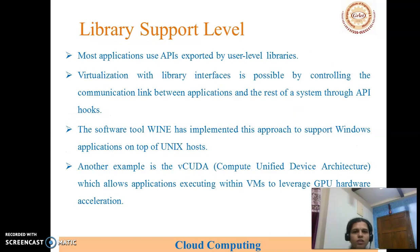At the library support level, most applications use APIs exported by user-level libraries. Virtualization with library interfaces is possible by controlling the communication link between the applications and the rest of the system through API hooks. The software tool Wine has implemented this approach to support Windows applications on top of a Linux host. Another example is VCUDA — Compute Unified Device Architecture — which allows applications executing within a virtual machine to leverage GPU hardware acceleration.